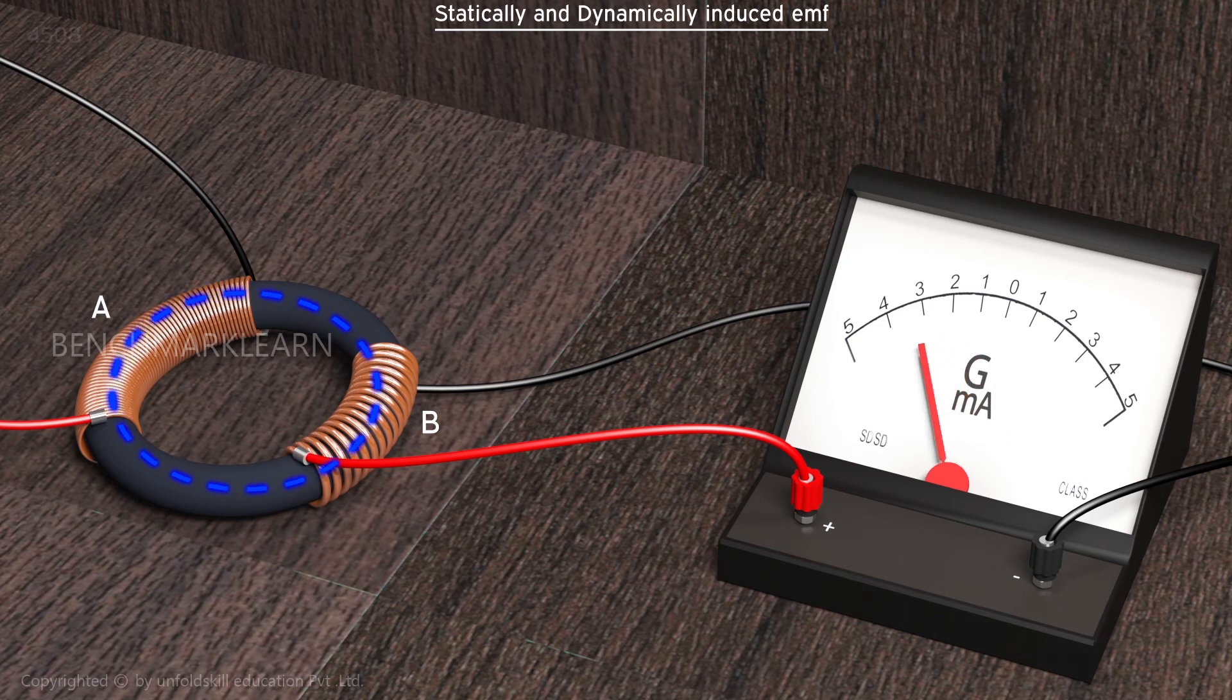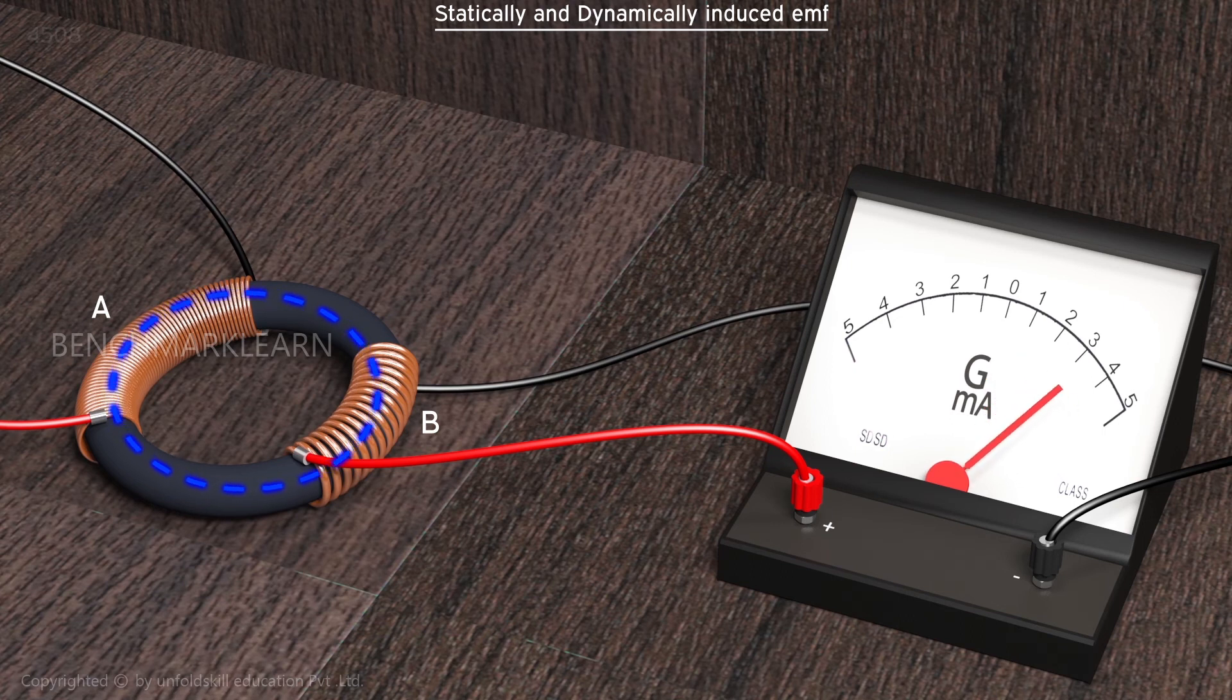The flux linking coil B has time varying magnitude. This creates an EMF across the coil B, which causes a current flow through the coil, which is detected by the galvanometer.